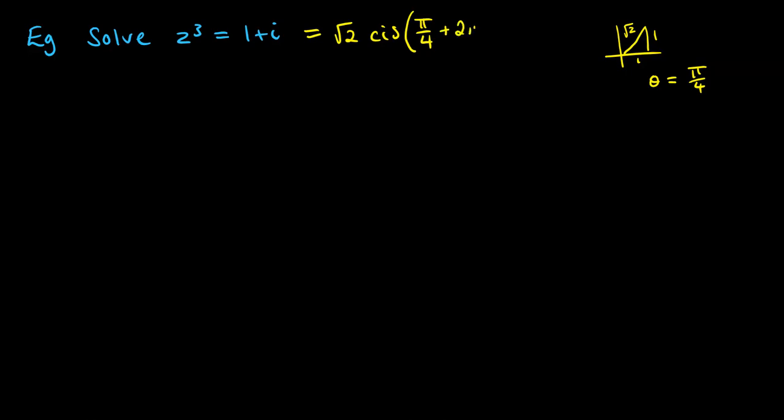Now remember, if this is a general form, it can be π/4 + 360, or in radians, + 2π, to find all of our roots there. So z will be equal to √2 to the power of 1/3. So I'm going to switch into decimals now, which is 1.122. And then cis of (π/4 + 2π) all divided by 3.